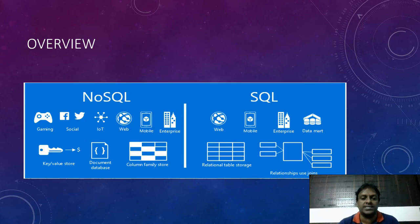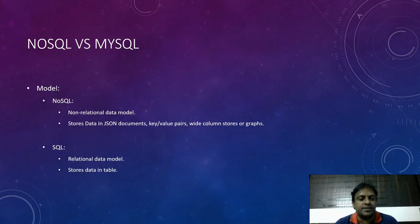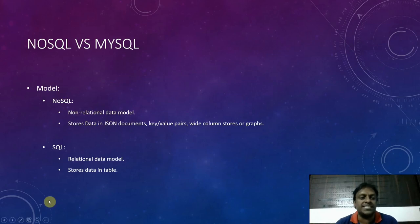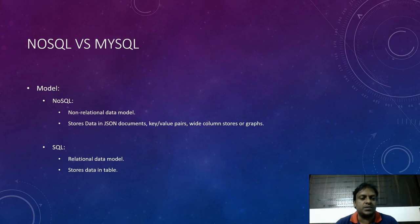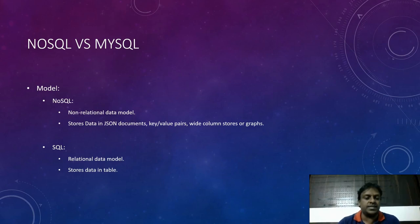In this slide I'm going to explain what data model NoSQL and SQL follow. NoSQL uses a non-relational data model and stores data in JSON documents, key-value pairs, wide column stores, or graphs. SQL uses a relational data model and stores data in tables.